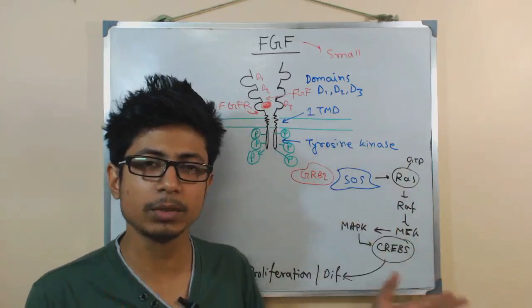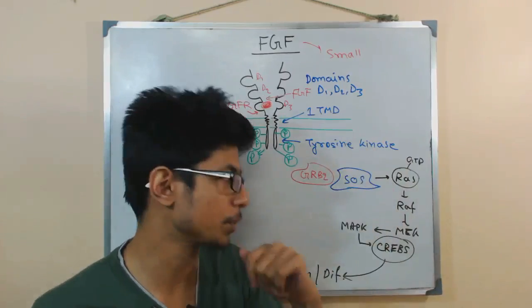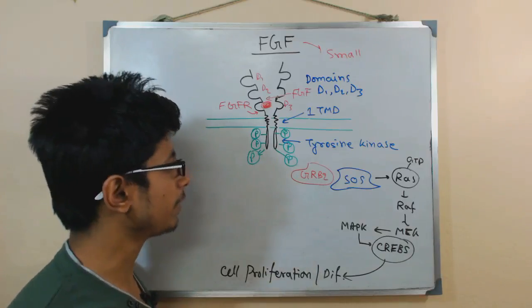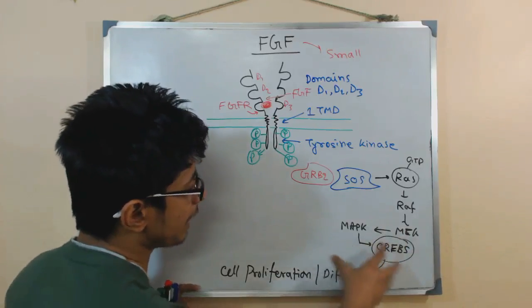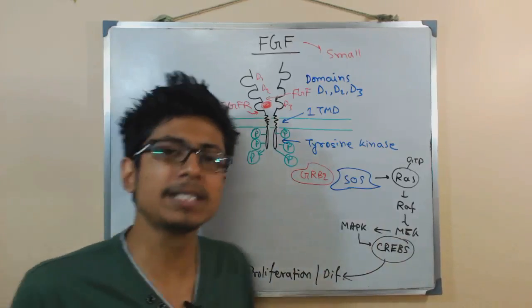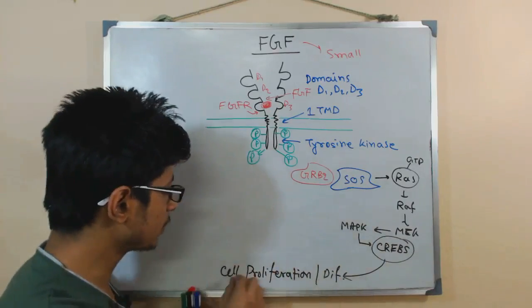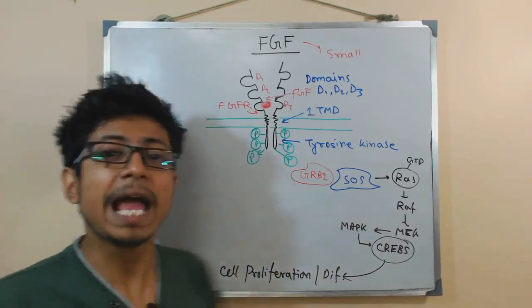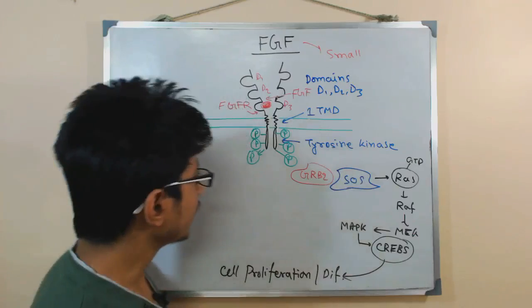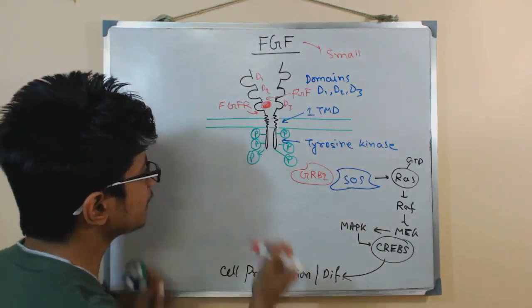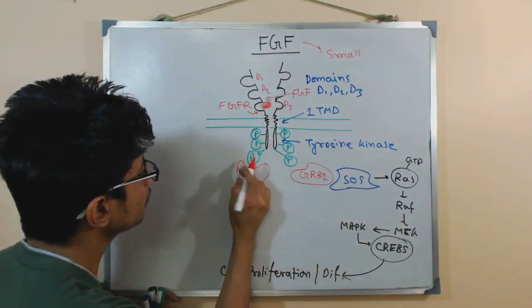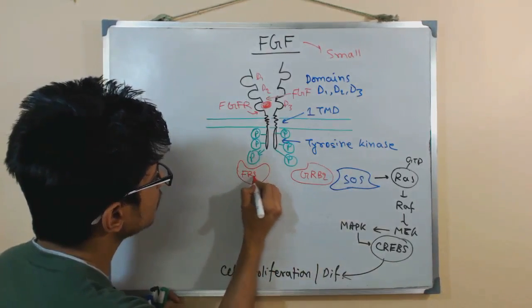I recommend you watch that video — the link is in the annotation and description, or you can search for epidermal growth factor receptor and signaling to find it. Once this pathway is activated, it triggers cell division and cell growth. The second pathway actually helps in cell proliferation and differentiation. On the other hand, it can also activate another set of proteins — FRS alpha 2.